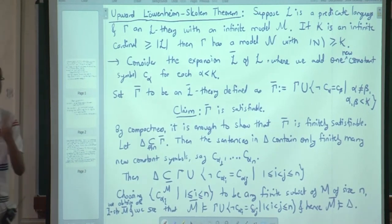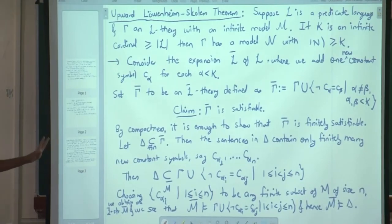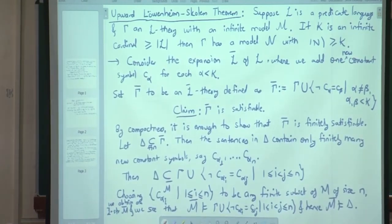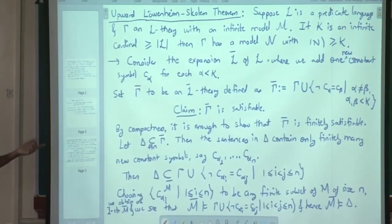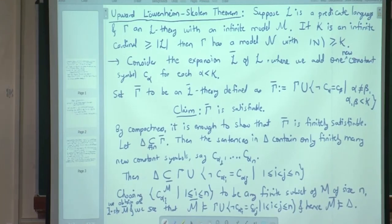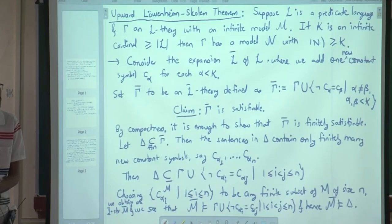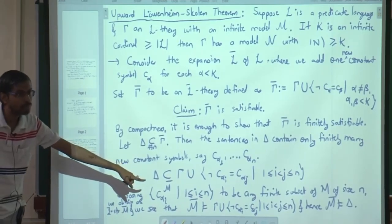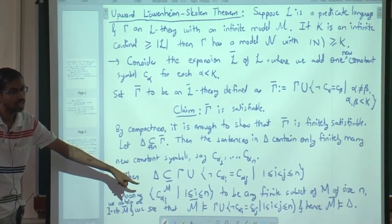Using just modifications of one infinite structure, we can prove this. By compactness, let N-bar be a model of gamma-bar. Thanks to the sentences — negation c_alpha equals c_beta for all distinct alpha, beta less than kappa — we know N-bar satisfies all those inequalities. Therefore, the universe of N-bar has at least kappa elements.